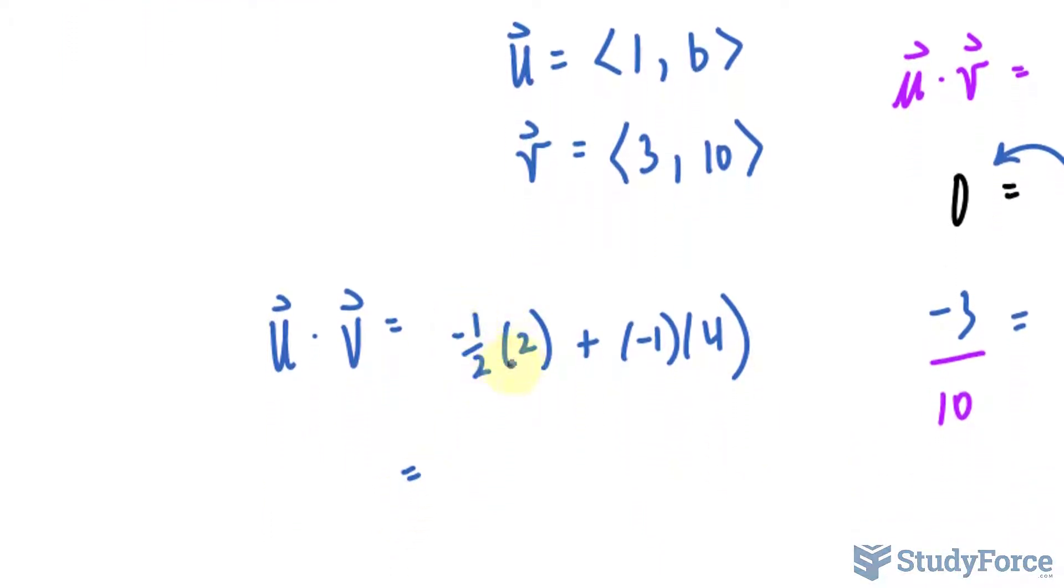Let's simplify. Half times 2 is negative 1. These two multiplied as negative 4, and that is equal to negative 5. Given that the dot product is not equal to zero, these are not parallel.